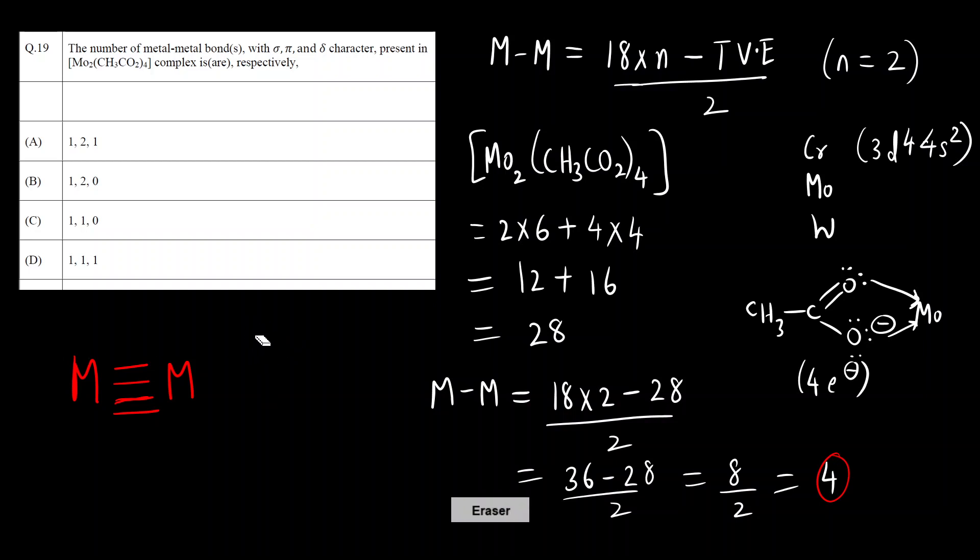How is a sigma bond formed? There is one lobe to lobe interaction. Let's say s orbital is combining with an s orbital - two lobes or two lobes of the orbitals are combining to form a sigma bond. How is a pi bond formed? 2 plus 2, 4 lobes are interacting to form a pi bond.